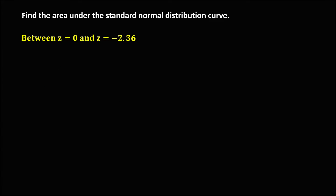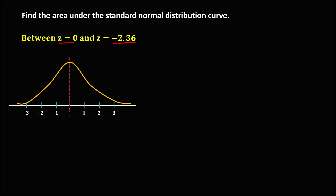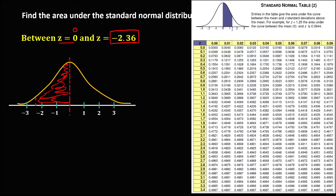For this given, find the area between z equals 0 and z equals negative 2.36. In a normal curve, this is z equals 0, and we assume this is negative 2.36. Since the area for z equals 0 is 0, to find the area for negative 2.36 using the table, we ignore the negative. So we have 2.3 and 0.06, that's 2.36. Connect to find the area — that's equal to 0.4909.